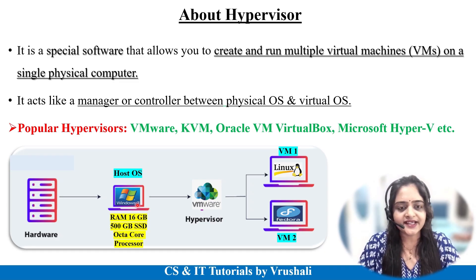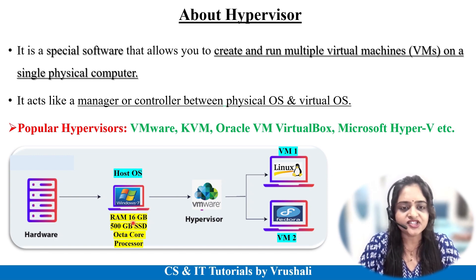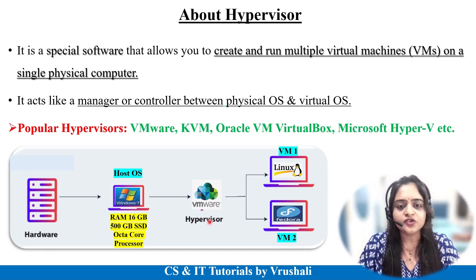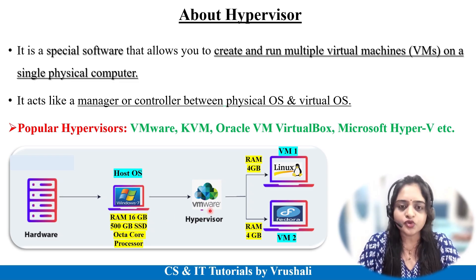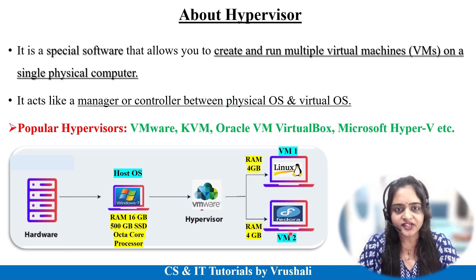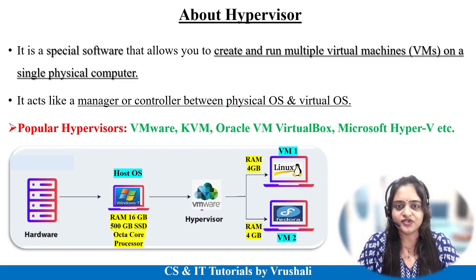Let's take an example. Suppose your host operating system has 16 GB RAM, 500 GB SSD, and an octa-core processor. The hypervisor divides 4 GB RAM to the Linux virtual machine and another 4 GB RAM to the Fedora virtual machine. Similarly, a dual-core processor handles the Linux VM and another dual-core handles the Fedora VM. This is the work of the hypervisor: to efficiently distribute all hardware and software resources to each virtual machine.